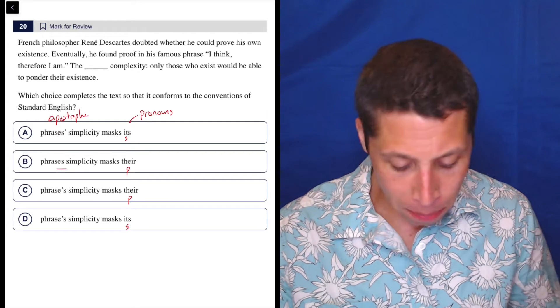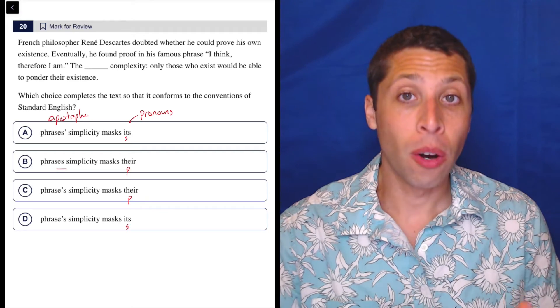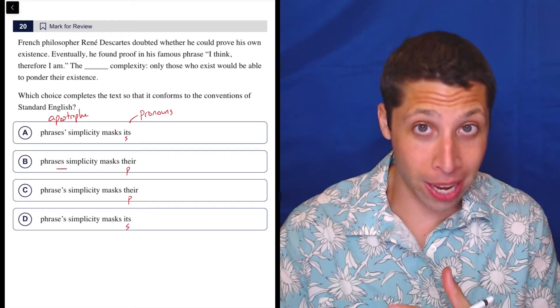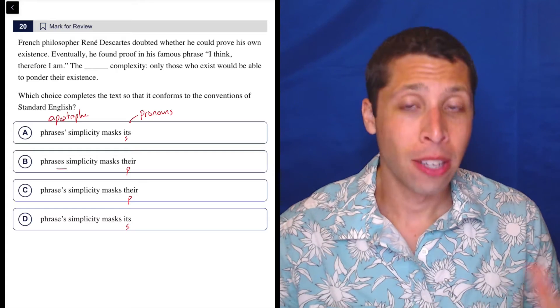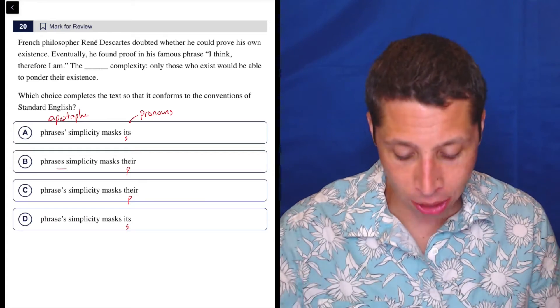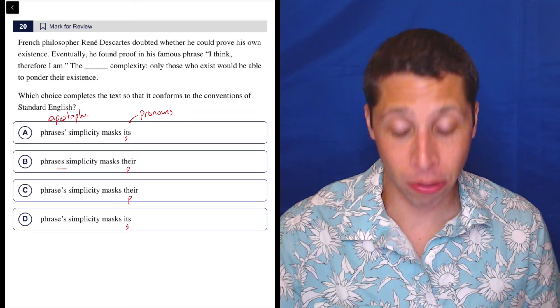But notice we have something like B where we don't even have an apostrophe at all. We should think about whether an apostrophe in a word like phrase is going to show possession. Does that possess anything? Do we actually need to have an apostrophe at all?